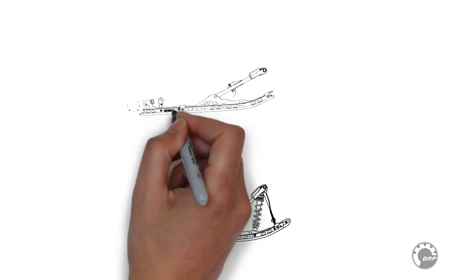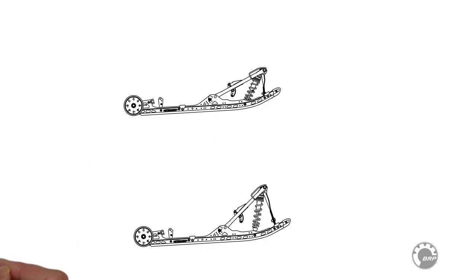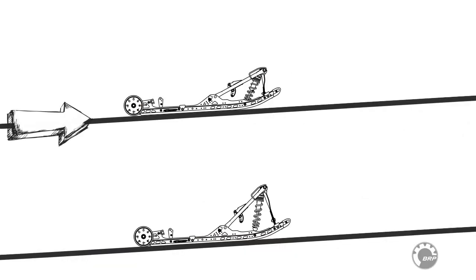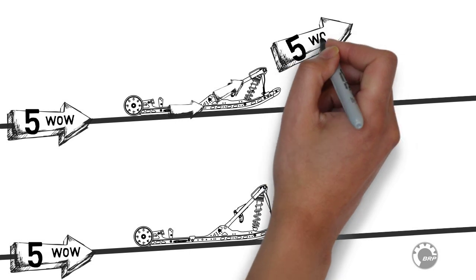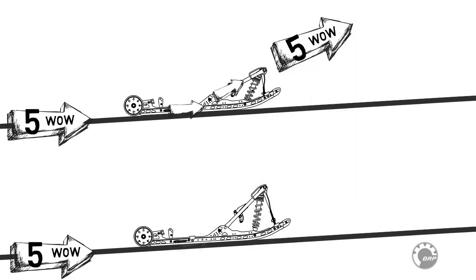If we call the unit of force driving the track, clutches and chain case gearing a WOW, we can see the effect of front arm angle on performance. Let's look at two different suspension setups. In both configurations, five WOWs of force are pushing on the rear wheels, through the slide rails and up the front arm, where the force of five WOWs pushes on the chassis.